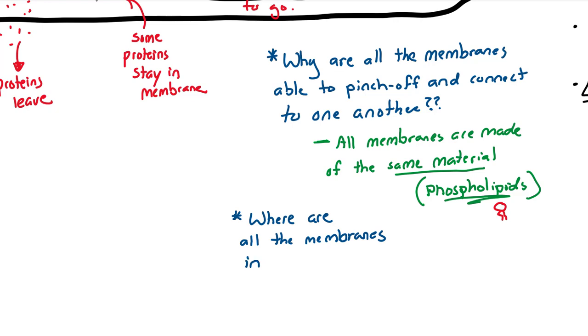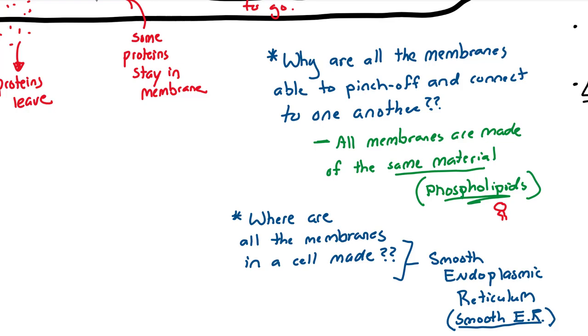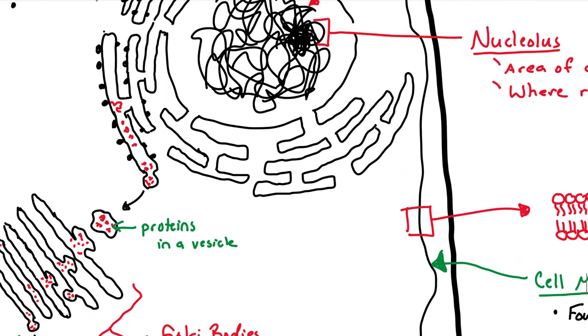The next logical question, where are all these membranes, these fatty membranes, made? They're made in the endoplasmic reticulum, the smooth, the smooth ER. Smooth ER, right here, is responsible for lipid synthesis or the synthesis of fats or lipids.